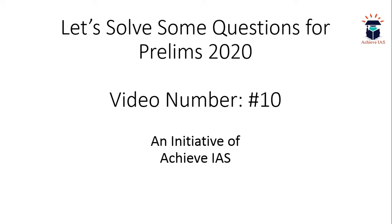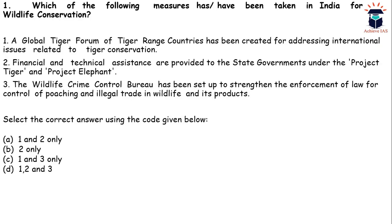Today is video number 10, and we will be discussing MCQs of environment and ecology. The first question is: which of the following measures have been taken in India for wildlife conservation? First, a Global Tiger Forum of tiger range countries has been created for addressing international issues related to tiger conservation. Second, financial and technical assistance are provided to state governments under Project Tiger and Project Elephant. Third, the Wildlife Crime Control Bureau has been set up to strengthen enforcement of law for control of poaching and illegal trade in wildlife.